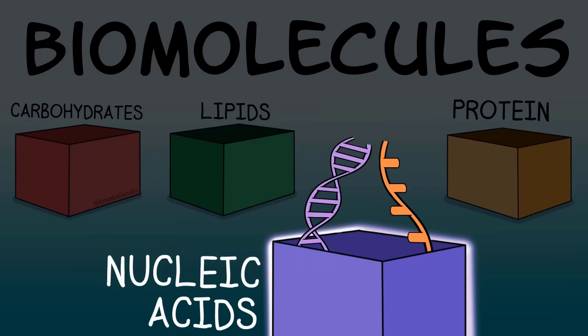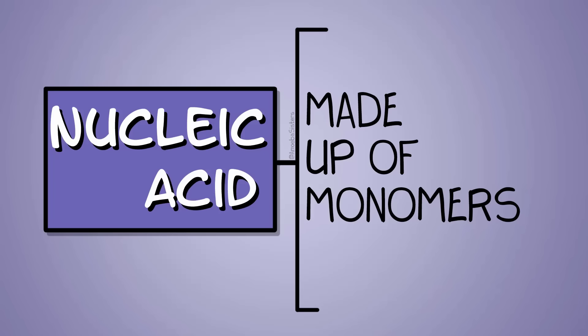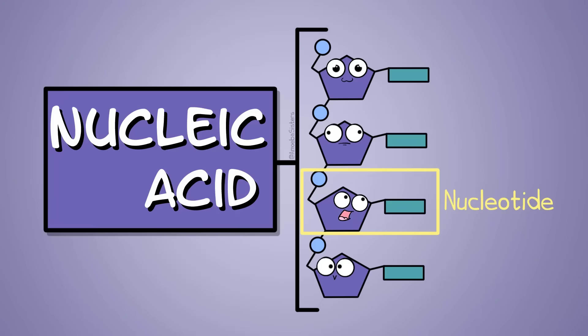Both DNA and RNA are nucleic acids, which are a type of biomolecule. Nucleic acids have a monomer which, if you remember from our biomolecules video, a monomer is a building block. The monomer for nucleic acids is a nucleotide, so both DNA and RNA have nucleotides.